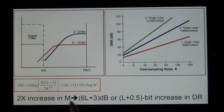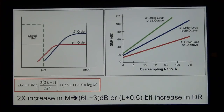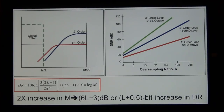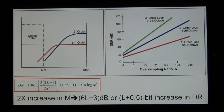For a second-order delta-sigma, getting from 4 bits to 8 bits only requires an oversampling ratio of 2 to the 3, which is a factor of 8 — not a factor of 65,000. Every additional bit is 6 dB, and 2.5 bits per doubling means 9 dB improvement — that's 8 times reduction in quantization noise power. Building higher-order delta-sigma modulators gives you much more from your oversampling ratio.